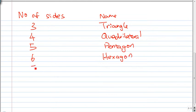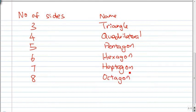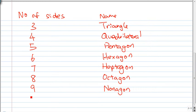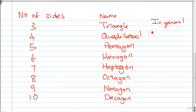If a polygon has seven sides it's called a heptagon. If it has eight sides it's called an octagon — like an octopus which has eight arms. If it has nine sides it's called a nonagon.